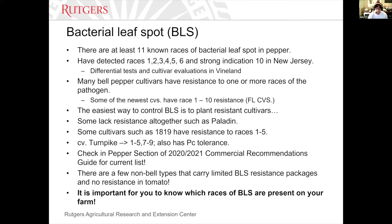Some of our more traditional varieties, such as Paladin — which we've used in New Jersey for the past 15 to 20 years for Phytophthora resistance — has no resistance to bacterial leaf spot. Some of our newer cultivars, such as variety 18 and 19, have resistance to races one through five. The cultivar Turnpike, developed by Seminis, has resistance to races one through five and seven through nine, and also has Phytophthora tolerance. You can check out the 2020–2021 commercial vegetable recommendations guide to see the list of pepper varieties we recommend.